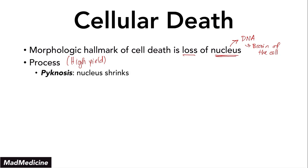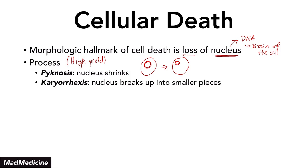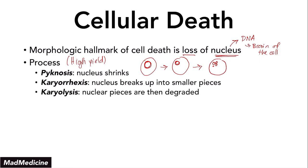The first process is pyknosis, in which the nucleus is going to shrink in size. From pyknosis, you progress to karyorrhexis, in which the nucleus actually splits up into smaller little pieces. And then finally you go to karyolysis, in which the nuclear pieces are then degraded. When that happens, you have no nucleus present — and that is a dead cell, which is the morphologic hallmark of a dead cell.